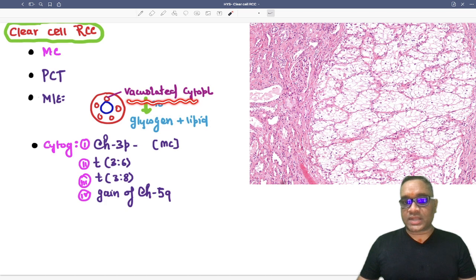So because of vacuolated cytoplasm, the name has been given clear cell RCC. This vacuolated cytoplasm will be consisting of glycogen and lipid both.